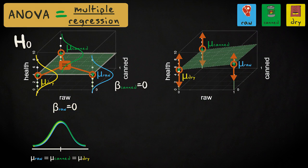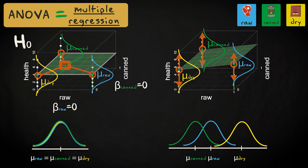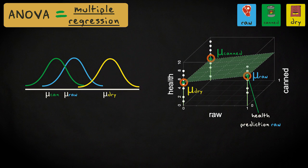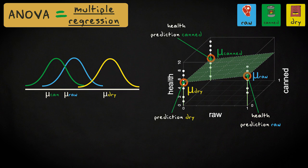If we recall the visual representation of the null hypothesis in one-way analysis of variance, you can see that the flat plane corresponds with population distributions with the same mean, and the alternative corresponds with population distributions with different means. In regression, the predicted health value for cats that eat raw food is the mean health score in the raw meat group, and the same goes for the other groups. In multiple regression, the variation in the residuals, or prediction errors, is the variation in the observations in each group around the group mean.